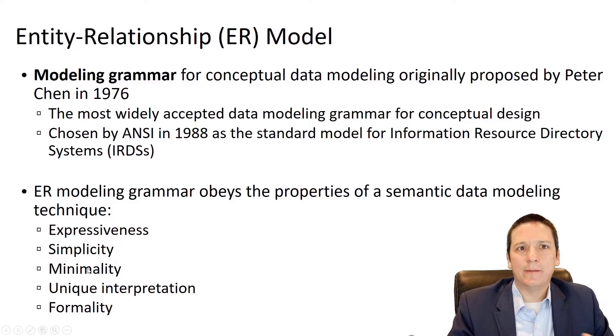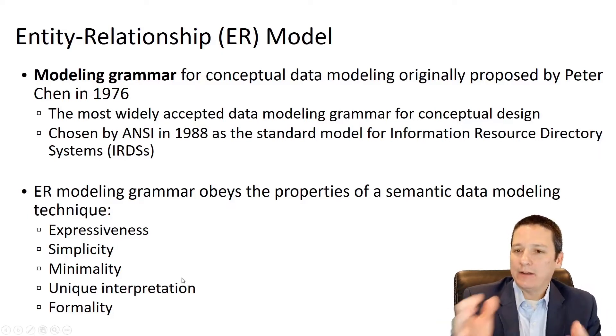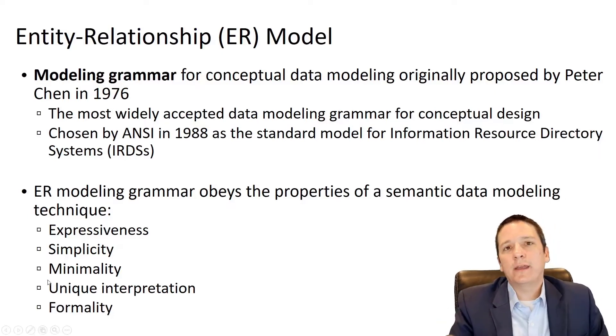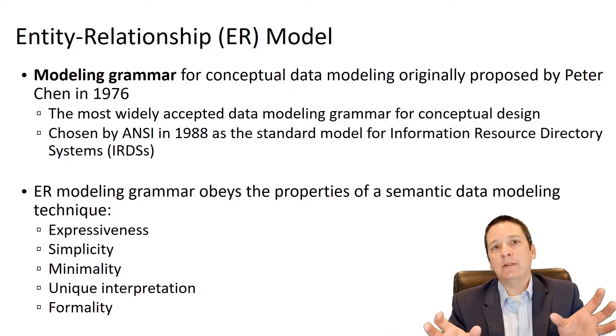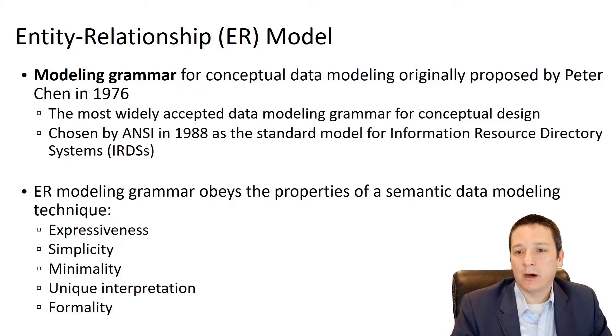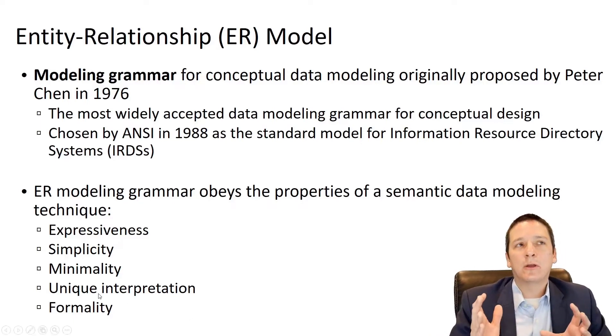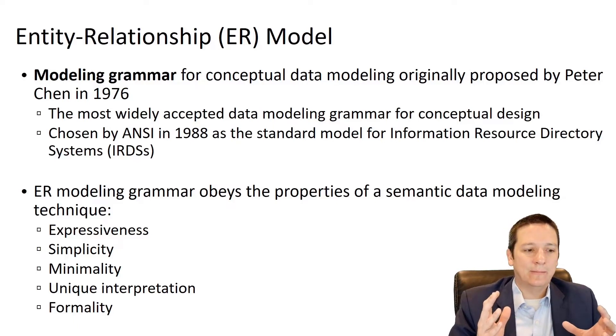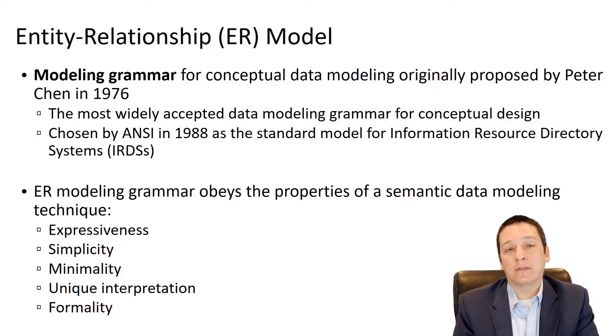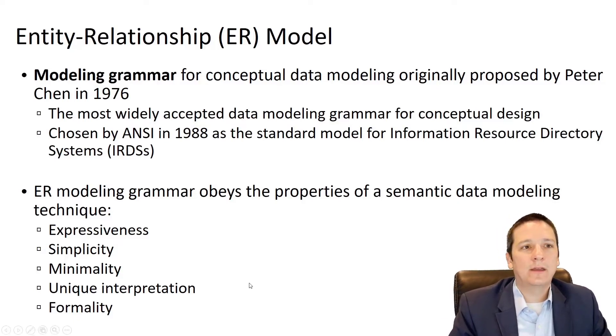Minimality, kind of the same idea, meaning we don't have a lot of extra stuff. It's just kind of what we need and nothing more. And kind of on the other side of that, there is a unique interpretation for everything we're doing. So our model is going to be unambiguous. So we can take this model and write SQL code that completely captures everything in our data model and have a good, solid, technical implementation of the model. And the formality, there are right and wrong ways to model something. We can't just kind of willy-nilly do whatever we want because we do have to have the technically correct product on the other side of it.